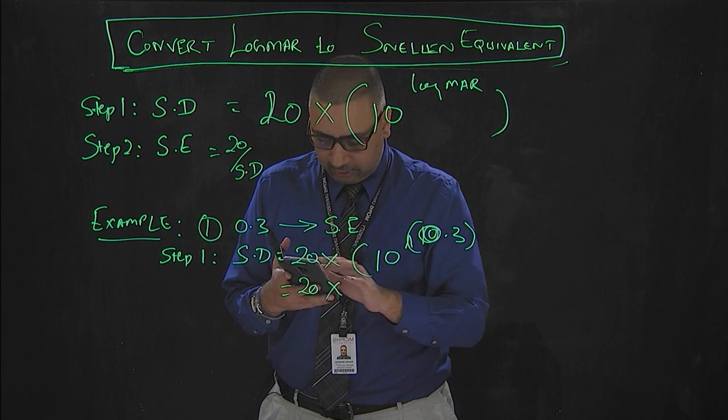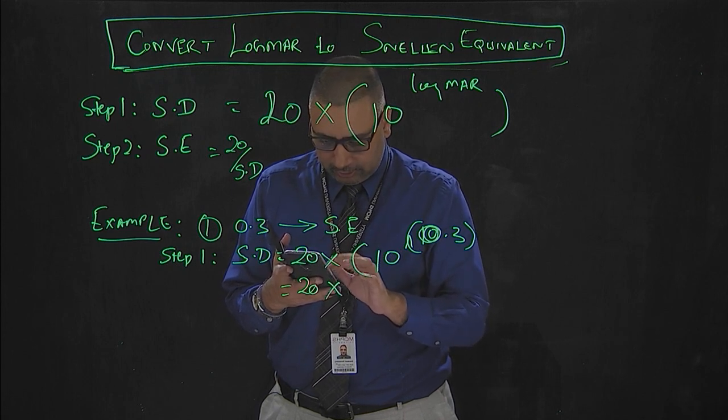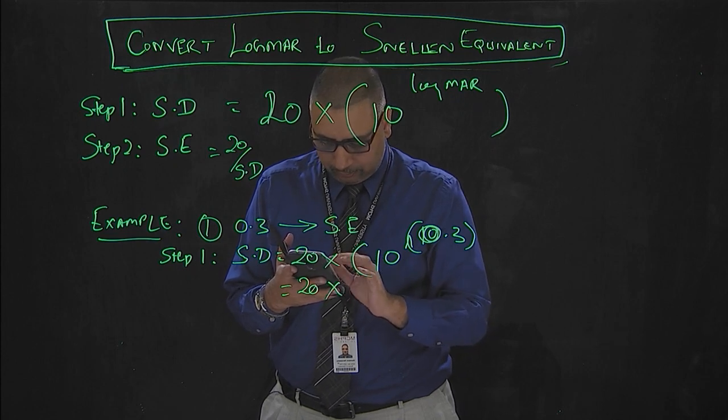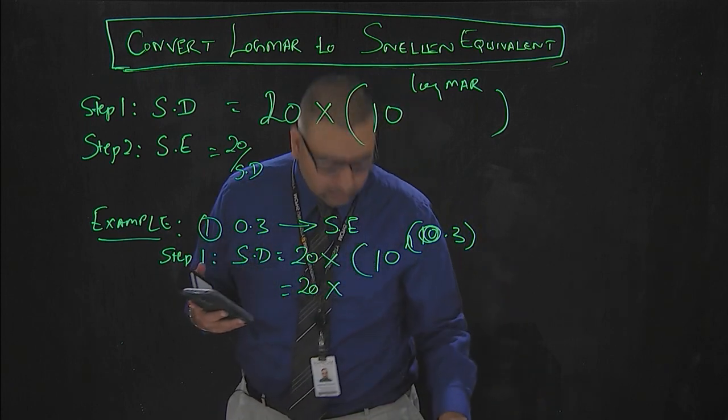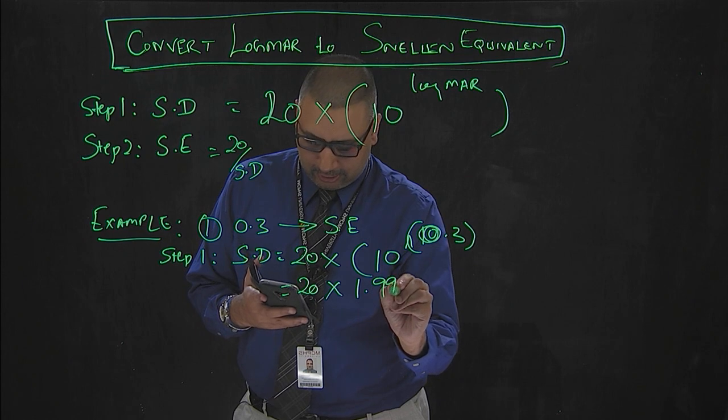The calculated value for 10 to the power 0.3 would be 1.995.